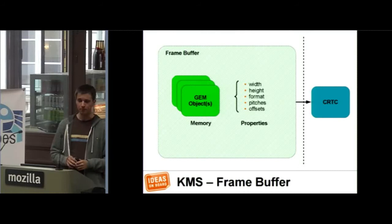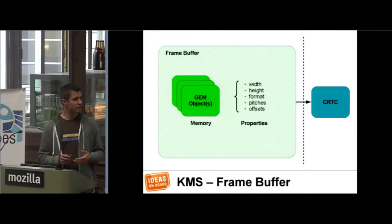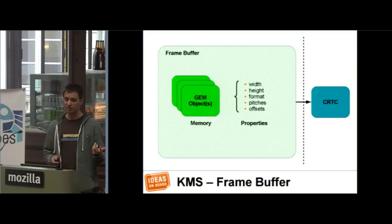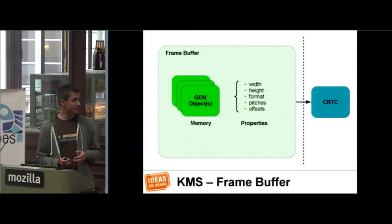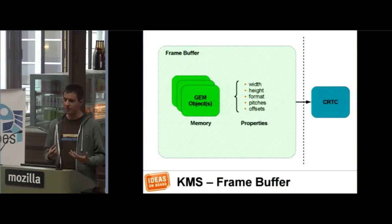Usually we think of a frame buffer as a piece of memory in which you store pixels. In the case of KMS, it's slightly more complex. Pixels can be stored in a single piece of memory — RGB pixels with one byte for red, green, and blue. But depending on the format, several pieces of the image could be stored in separate pieces of memory. So the frame buffer is an abstract object in KMS terms that will group one or more memory buffers and attach a couple of properties to them: a size, a width and height, a format, and pitches and offsets that allow you to specify how the pixels are formatted in memory.